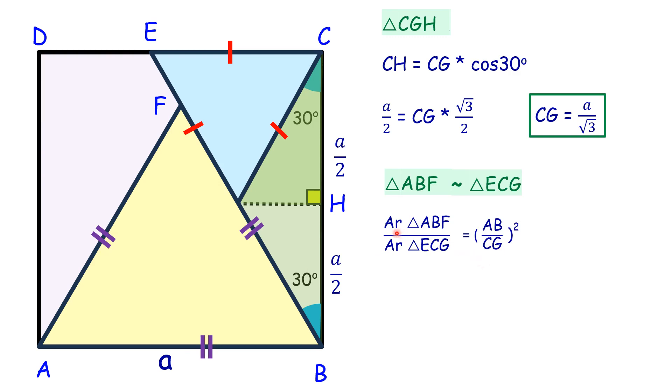The area of triangle ABF is 30 square centimeters. So 30 over the area of triangle ECG equals (a/(a/√3))², where CG equals a/√3 as we found earlier.